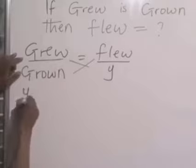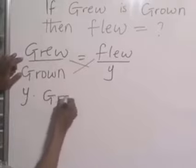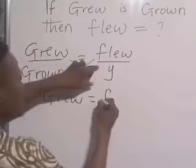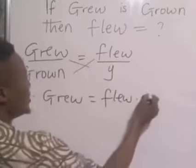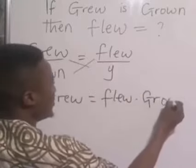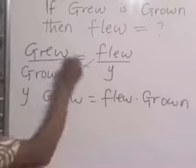Y times grew equals flew times grown. That is cross-multiply.